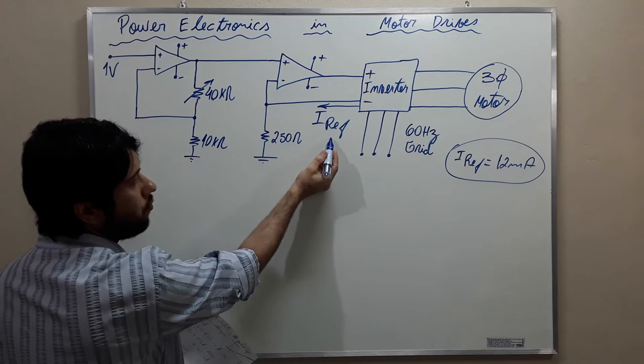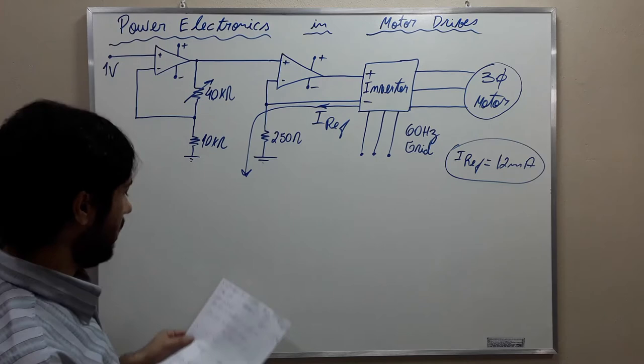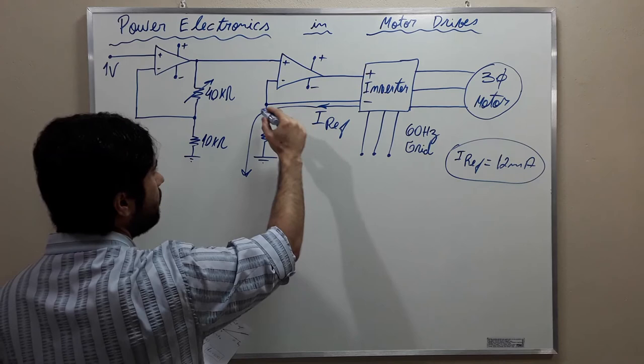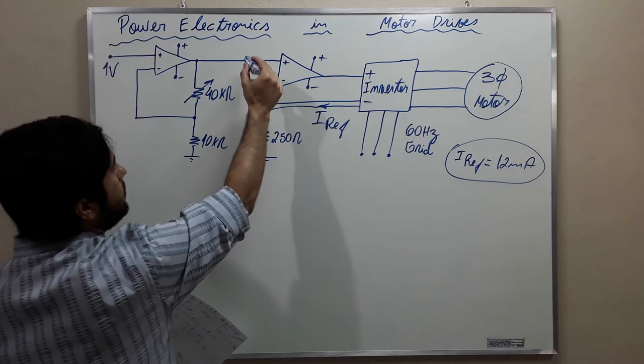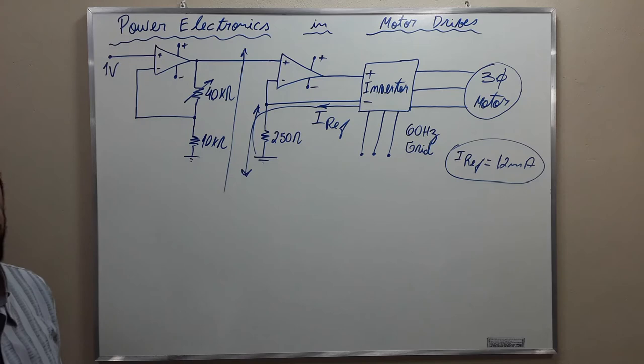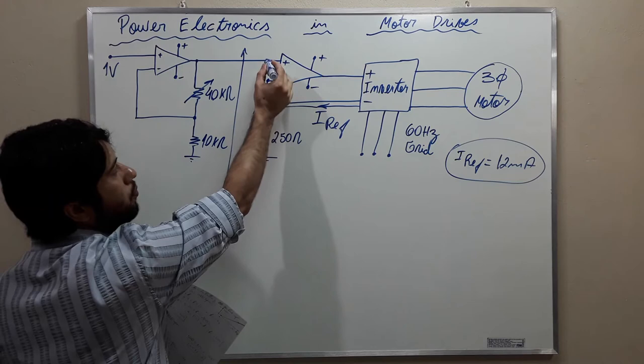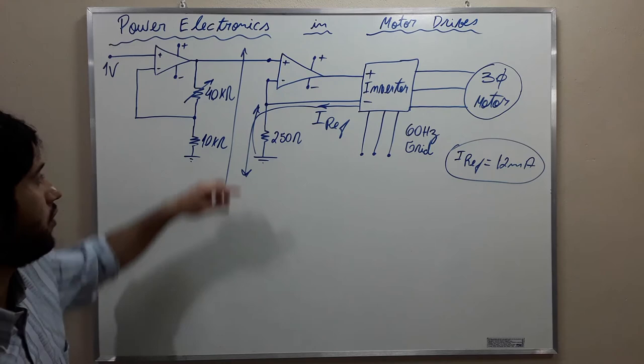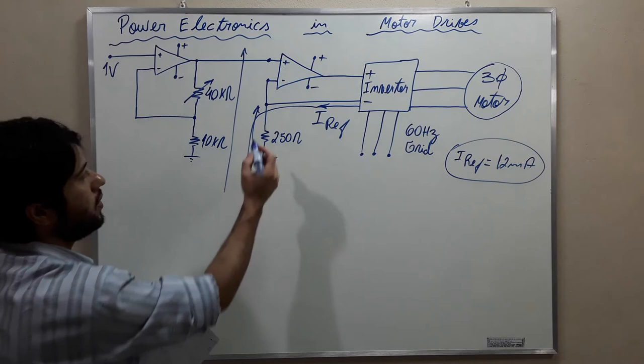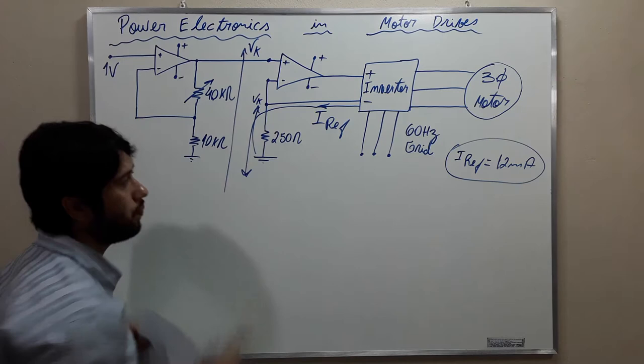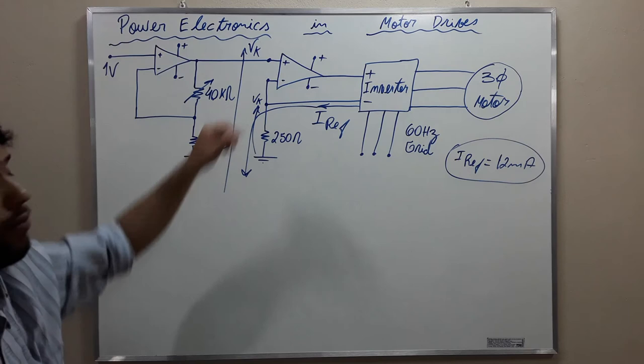Now we need to understand that this reference current passes here and goes to ground. This voltage drop — which I am calling vk — is on top of this resistance. In operational amplifier theory, there is a virtual short circuit between the inverting and non-inverting input points — not physical but virtual. So we can understand that this voltage drop vk is also present at the other side of the circuit. This is key to understanding the next step.